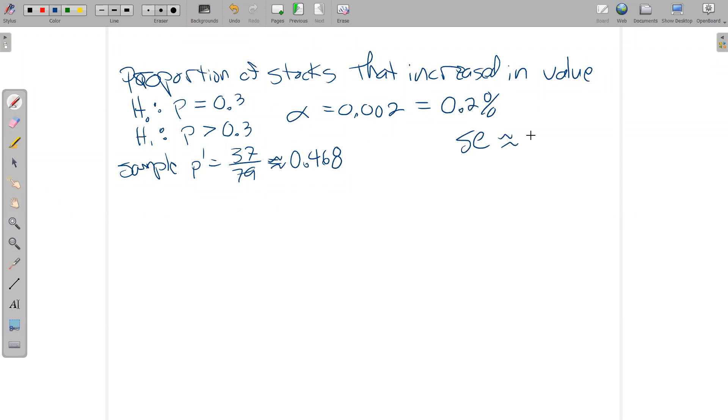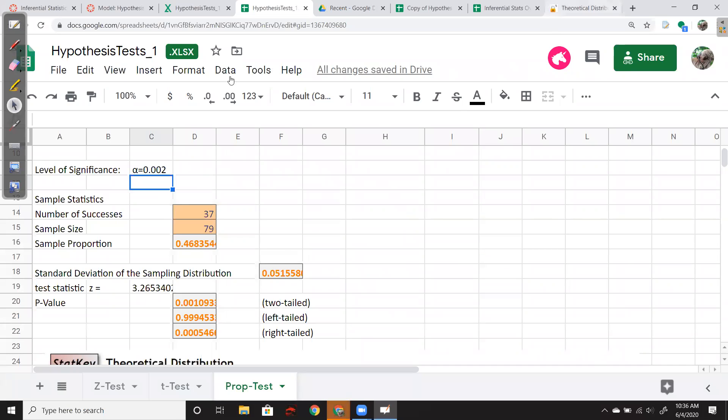The sample had said that P prime is 37 over 79, which works out to be 46.8% roughly. The standard error here was approximately 5%. This is a hypothesis test, so the mean is the proportion from the null, so 30% goes in the middle. We usually go like one, two, three standard deviations on each side because that's about 99.5% of the data.